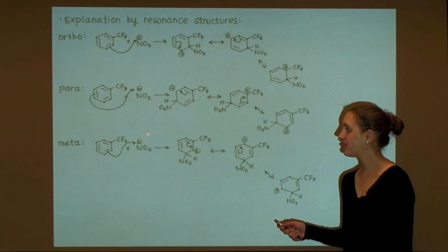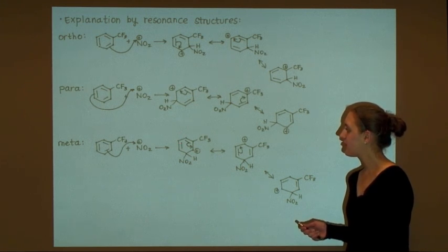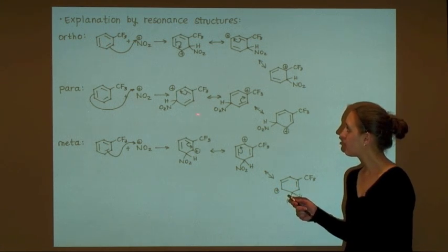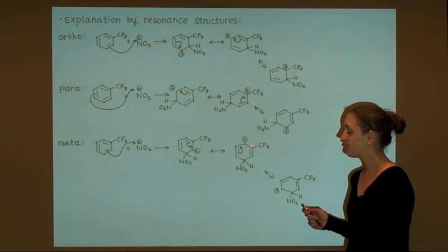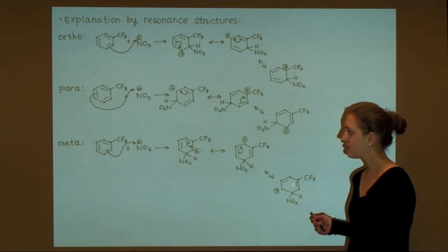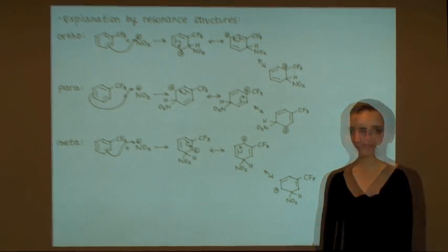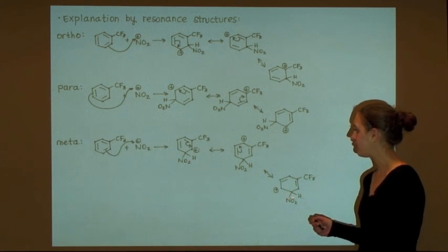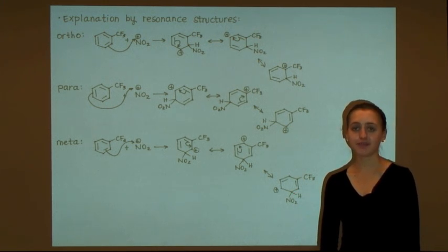Lastly, when the nitronium ion attacks the position meta to the trifluoromethyl group, it results in an arenium ion intermediate where the positive charge is ortho, para, and ortho to the newly installed nitro substituent. In contrast to the previous cases, none of these resonance structures contain a positive charge that is adjacent to the electron-withdrawing trifluoromethyl group. Therefore, none of these resonance structures are destabilized, and thus the arenium ion intermediate is more stable and formed at a faster rate. Because electrophilic attack is the overall rate-limiting step, and since the meta-substituted arenium ion intermediate accumulates at a faster rate, it ultimately leads to the formation of the major product, which is the meta-substituted product.